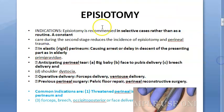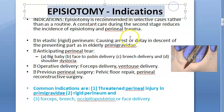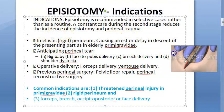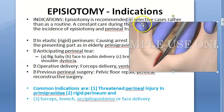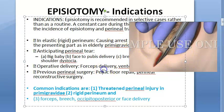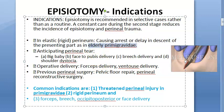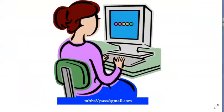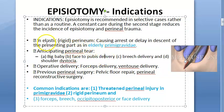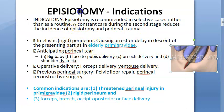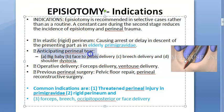Now moving on to the indications of episiotomy. You should not do it as routine — there are certain indications. If you are effectively managing the second stage of labor, you do not need to do an episiotomy. The indications include a rigid perineum, like in an elderly primigravida — she is getting pregnant for the first time when she is elderly, which in obstetrics means 35 plus. A rigid perineum can cause arrest of labor or delay in the descent of the presenting part, so you give an episiotomy in elderly primigravida.